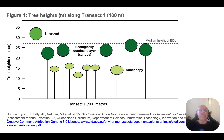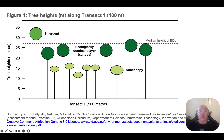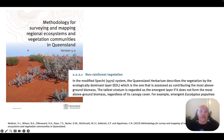Let's have a look at an example from the QCAA practice data test. What we're looking for is the height of the tallest stratum — in other words, the ecologically dominant layer. You might think the emergent layer is the tallest stratum, but there's some clarification here. An official Queensland document states that the ecologically dominant layer is the one that contributes the most above-ground biomass.